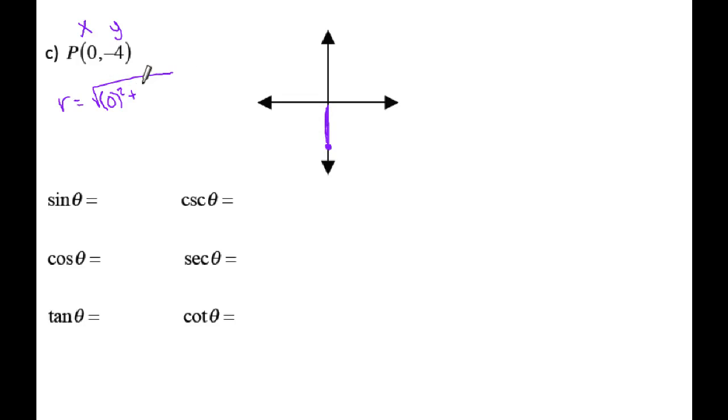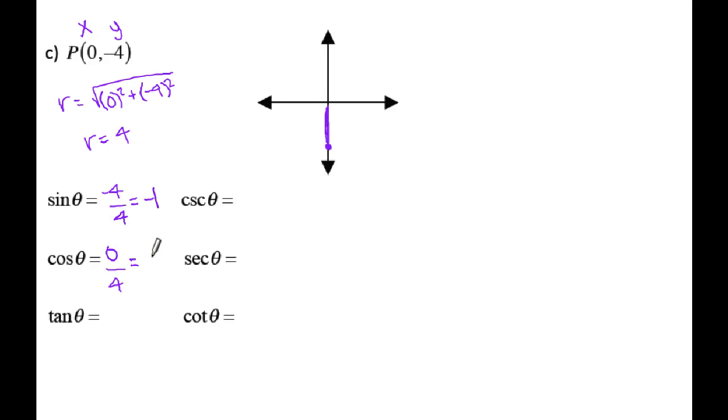For this last one, my point when I plot it just so happens to be on the negative y-axis. We don't really have a triangle to work with, but we can still figure out your six trig functions. Here's your x, your y, and r is just the square root of x squared plus y squared, which is going to be 4. Sine is y over r: negative 4 over 4, which reduces to negative 1. Cosine is x over r: 0 over 4, which reduces to 0.